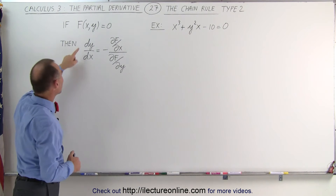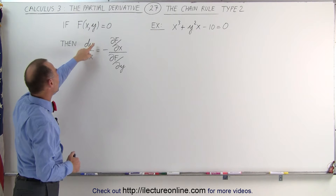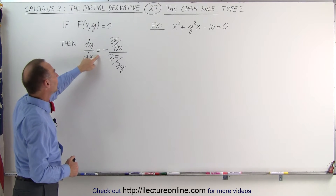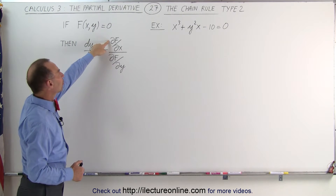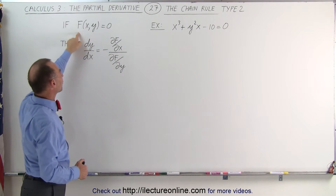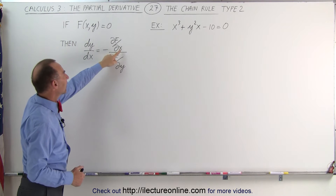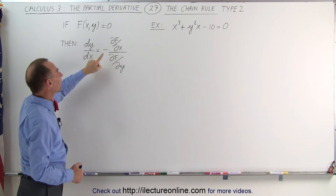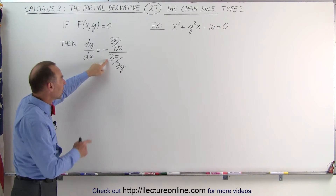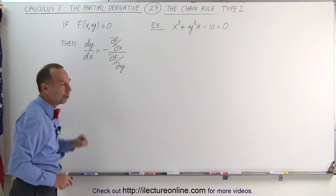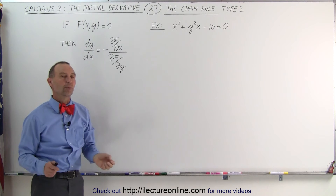Then we can say that the derivative of y with respect to x is equal to the negative of the partial derivative of the function with respect to x, divided by the partial derivative of the function with respect to y.